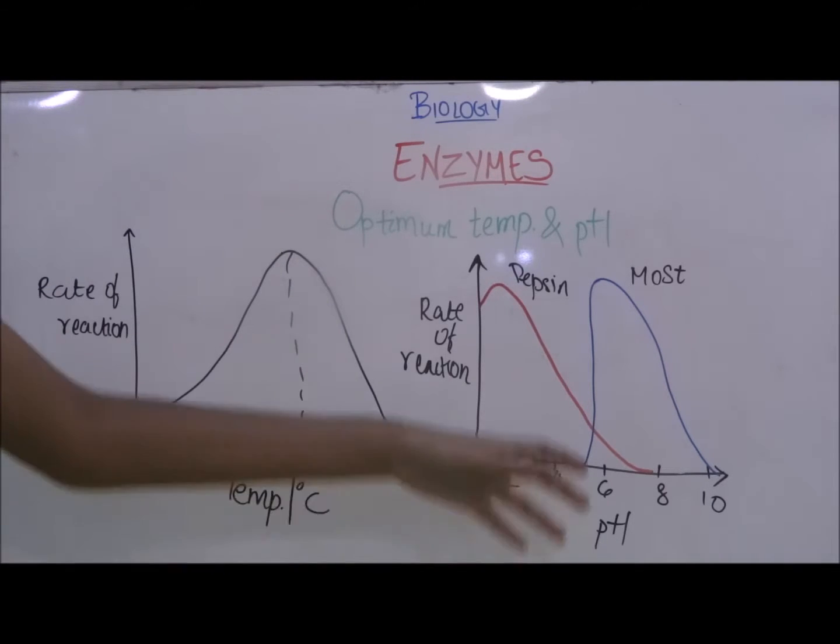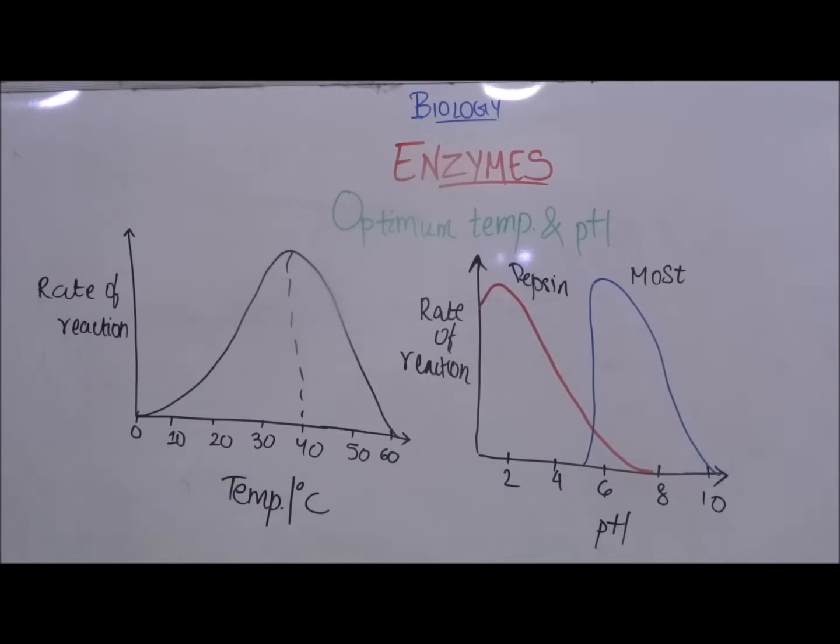Now when we look at pH the red line is for the enzyme pepsin which works the best in acidic conditions. And it is an enzyme present in the stomach and because there is hydrochloric acid present in the stomach it works the best in acidic conditions.